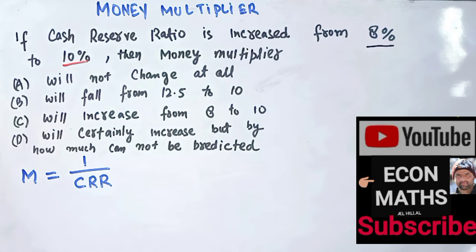So what we are being given: initially, let us say M₀ is our initial money multiplier, which is equal to 1 upon initially what is our cash reserve ratio. So in place of CRR I will write 8 percent, and 8 percent can be written as 0.08. So this comes out to be 1 upon 8 upon 100.